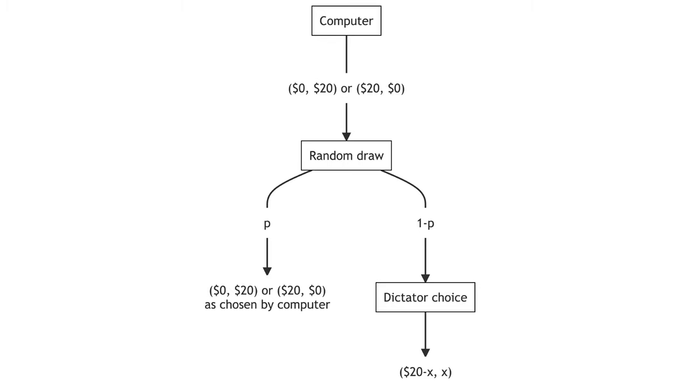Distributional preferences predict that P should not affect the dictator's choice. The dictator should just think about the situation in which their choice matters. However, the experimental results did not conform with this prediction. Dictators condition their decision on the common knowledge of P.